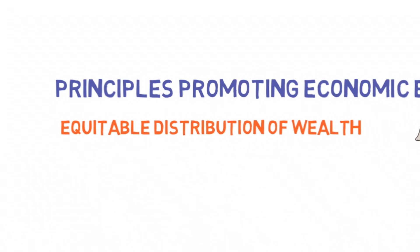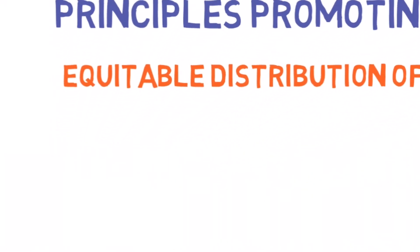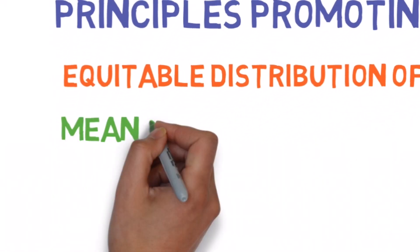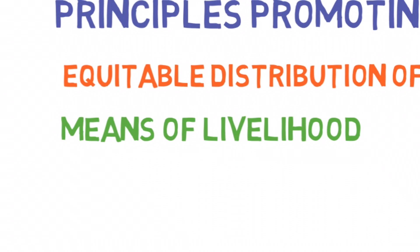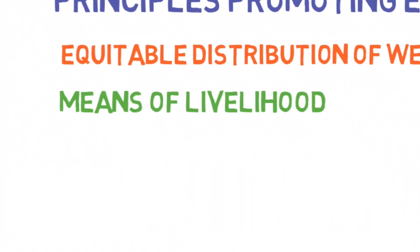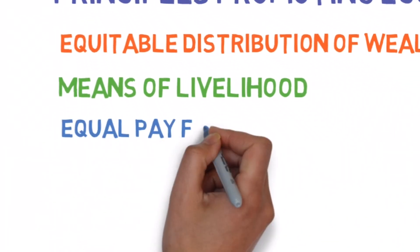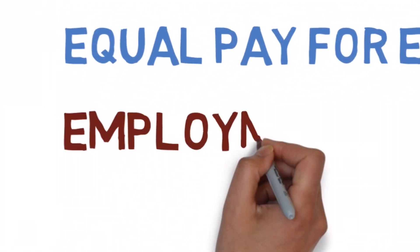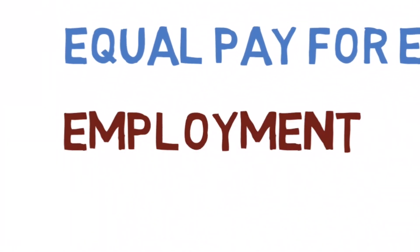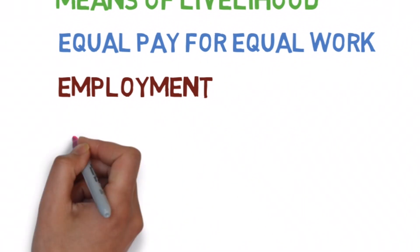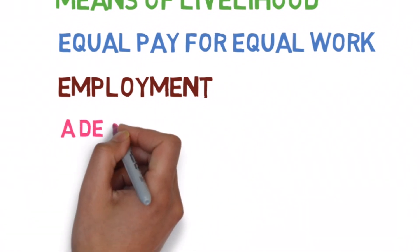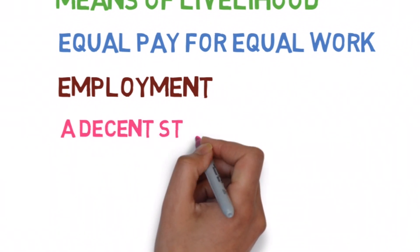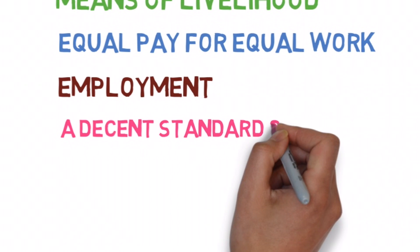The resources of the country should be used for the common good of all, adequate means of livelihood for all the citizens, equal pay for equal work for both men and women, the right to work so that there is no unemployment problem in the country, and assistance to old, sick and disabled people, a decent standard of living and leisure for all, and protection of children and youth against exploitation.